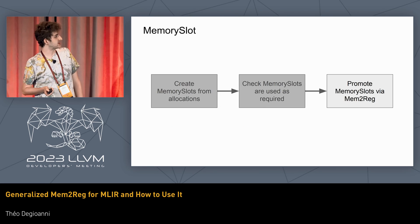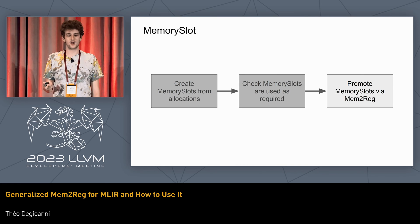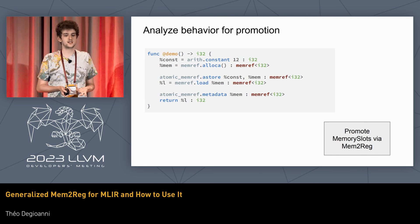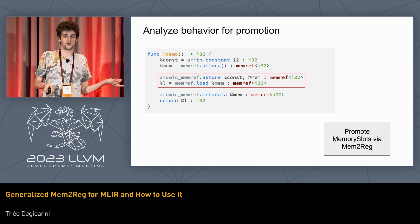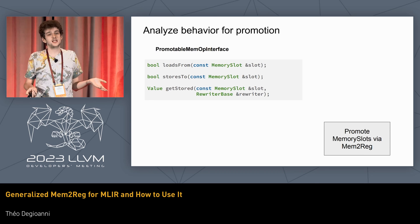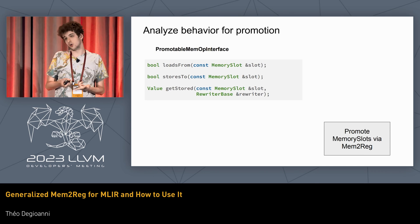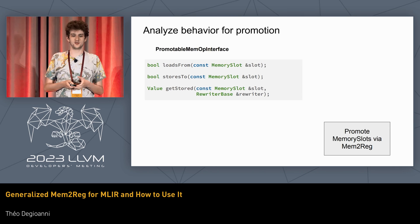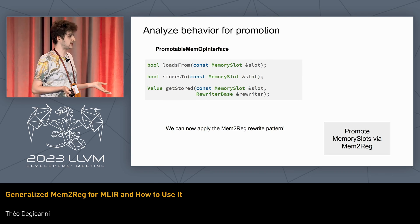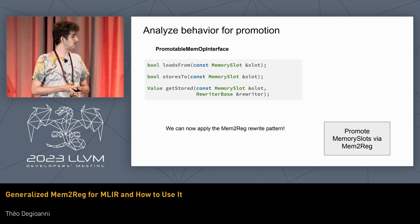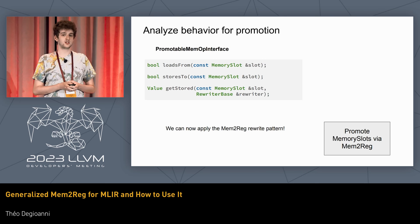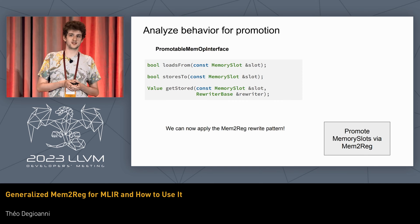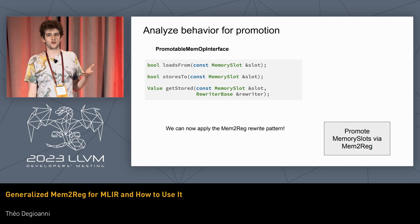Finally, we need to provide the core information for the analysis. The only things that need to touch memory are store and load, so we add those to the PromotableMemoryOp interface. All we need to tell it is whether a given operation loads from a given slot, stores to a given slot, and if it does store, what value it stores — so it can be used as a reaching definition for further operations. Once we've implemented all of that, we can just apply the Mem2Reg rewrite pass and get Mem2Reg on our dialect. These interfaces and their implementations do not depend on each other, so it doesn't matter if operations come from one dialect or another — we've solved the coordination issues.